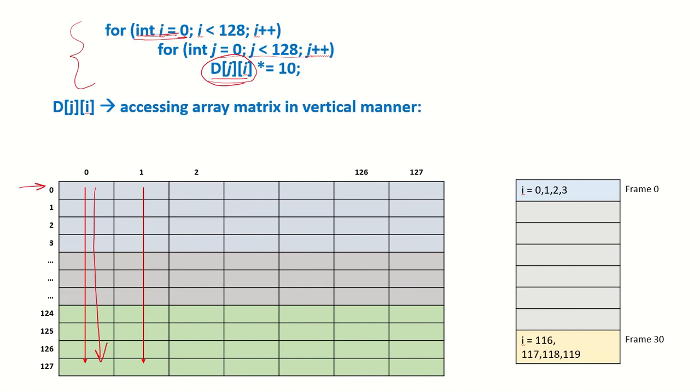So what will happen? Let us say i equals 0 and j equals 0, that means we are accessing this element D[j][i]. Then i is still 0 but j becomes 1.